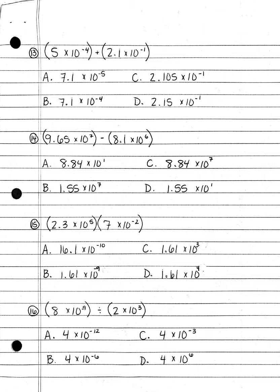Number 14. 9.65 times 10 to the seventh minus 8.1 times 10 to the sixth: A. 8.84 times 10 to the first power; B. 1.55 times 10 to the seventh power; C. 8.84 times 10 to the seventh power; or D. 1.55 times 10 to the first power.